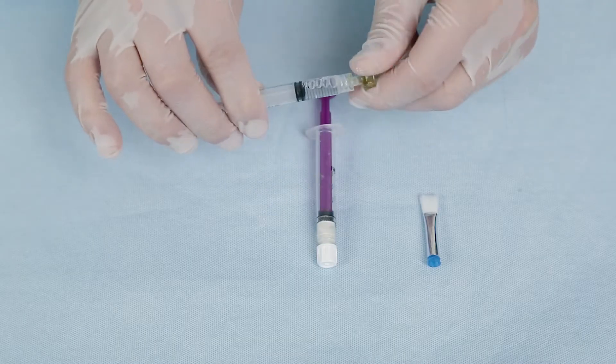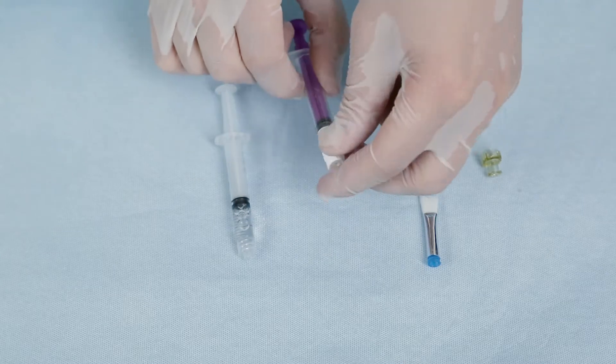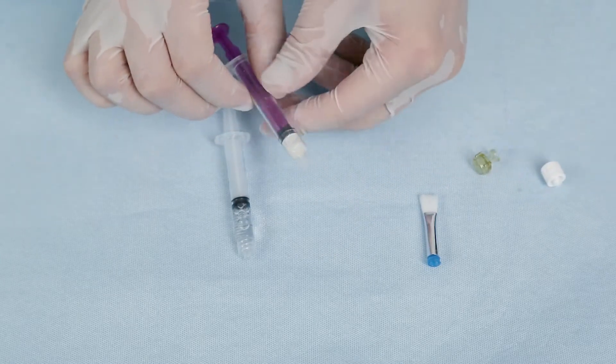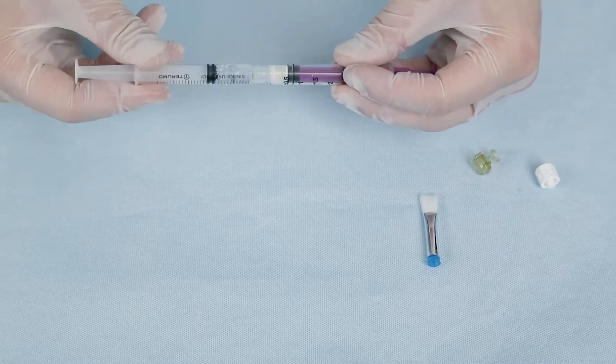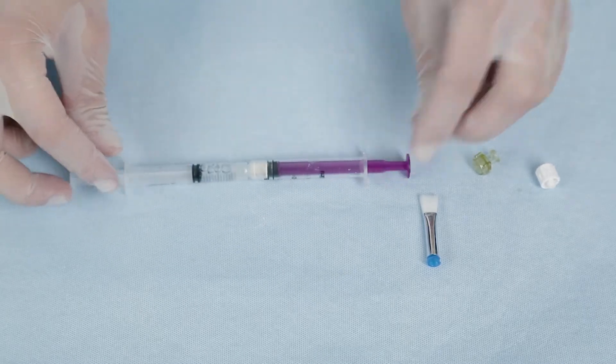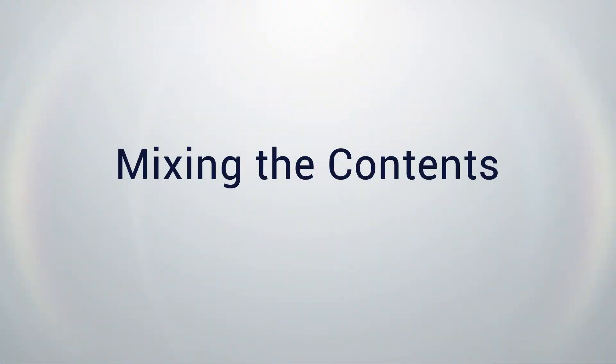Remove the caps from the two syringes and connect them together. Now you are ready for the second step, mixing the contents of the syringes.